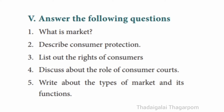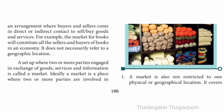Roman numeral 5 — Answer the following questions. Question 1: What is a market? The answer is given on page 190. A setup where two or more parties engage in exchange of goods, services and information is called a market.